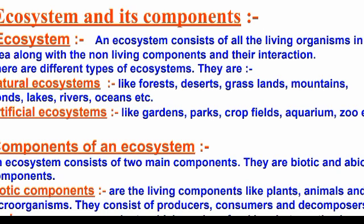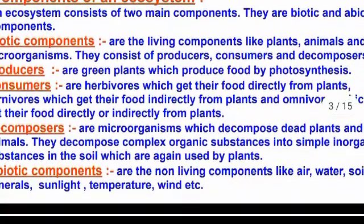Non-living and living things interact — for example, fishes completely depend upon water. A man-made garden is an artificial ecosystem where you have plants and non-living things interacting artificially for crop production. Other artificial ecosystems include zoos and aquariums.